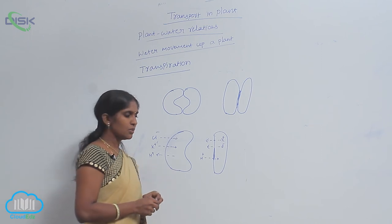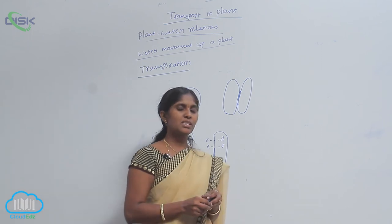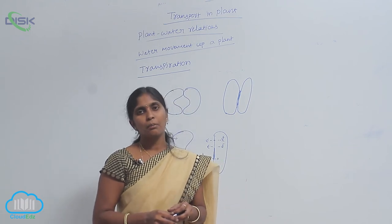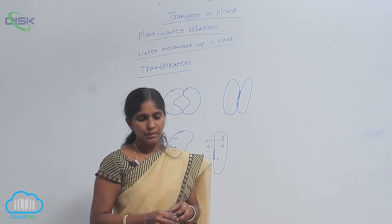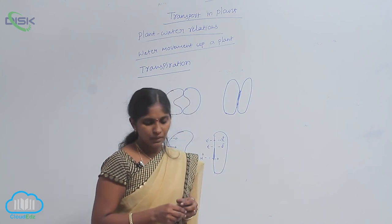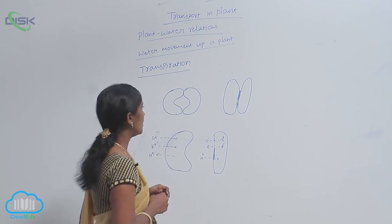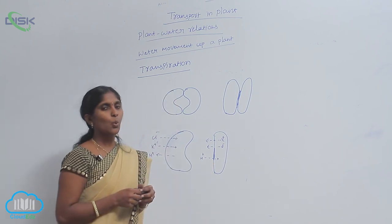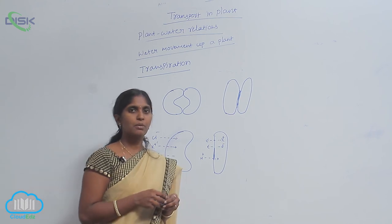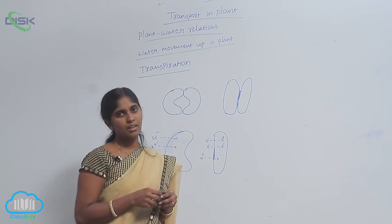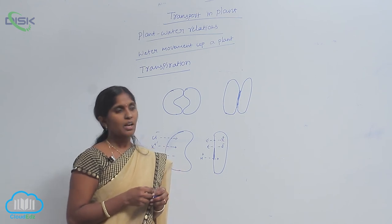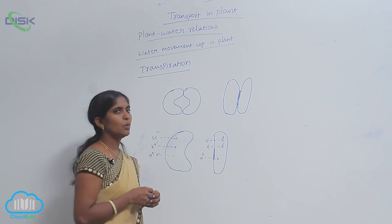Also, the opening of stomata depends on the orientation of cellulose microfibrils present in the cell wall of guard cells. When they are radial, the cellulose microfibrils are radial, then the stomata is easy to open.